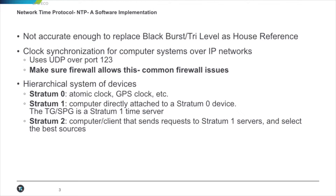The hierarchy is stratum 0, 1, and 2. Stratum 0 is your GPS or atomic clock reference — highly accurate. Stratum 1 is the world that we typically live in, where we're connecting a signal generator to a stratum 0 device, usually through GPS. Stratum 2 is the computer or client attached to a stratum 1 clock.